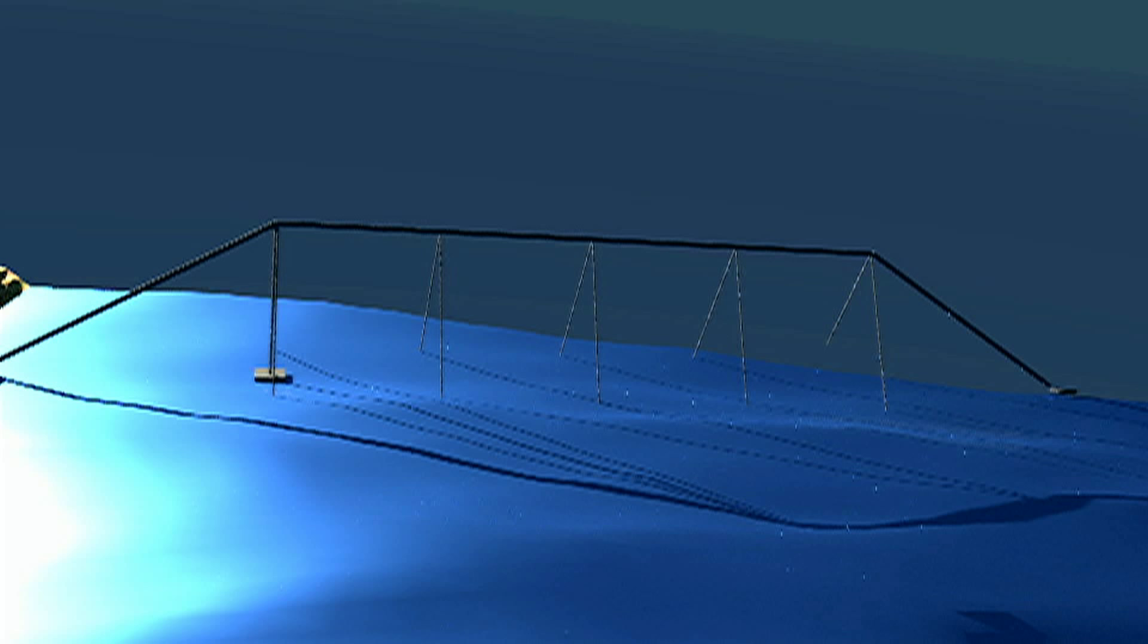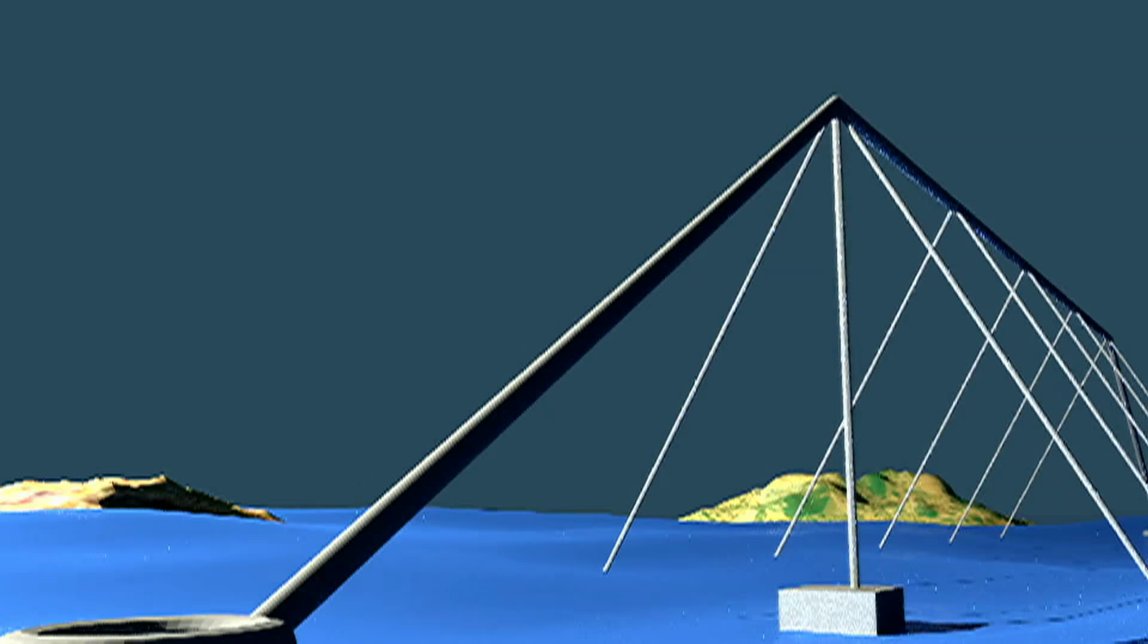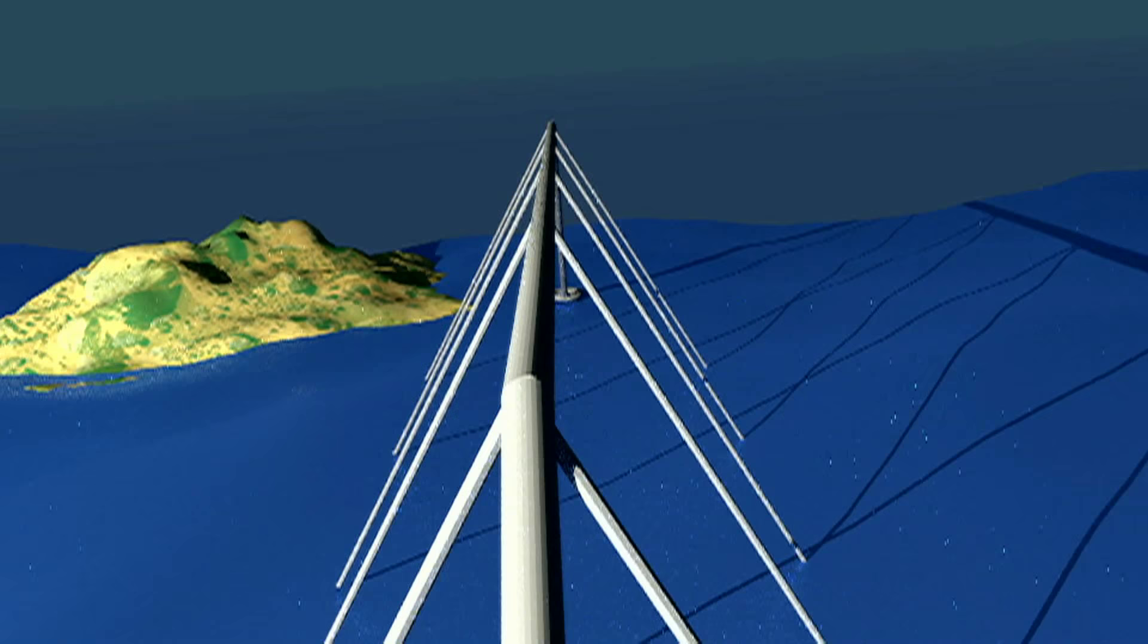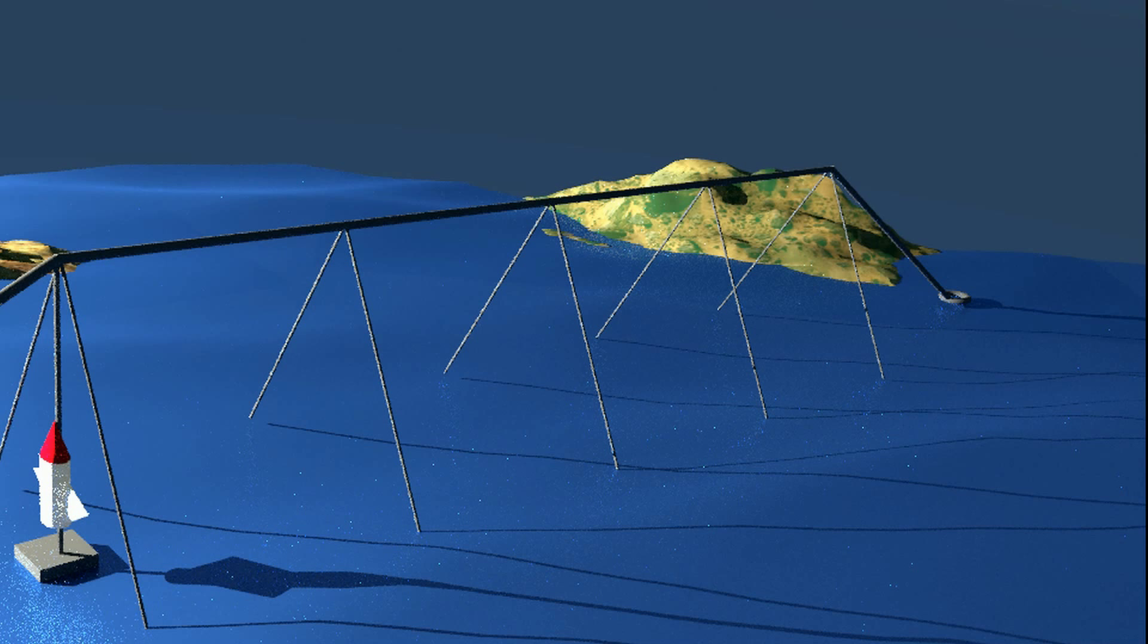Alright, let's get started. The object that's been drifting around the background during the introduction is a Lofstrom Loop. It is one of the more popular launch loop concepts. It is essentially a long runway or railroad track hovering 50 miles or 80 kilometers over the ocean, about 1,250 miles or 2,000 kilometers long.